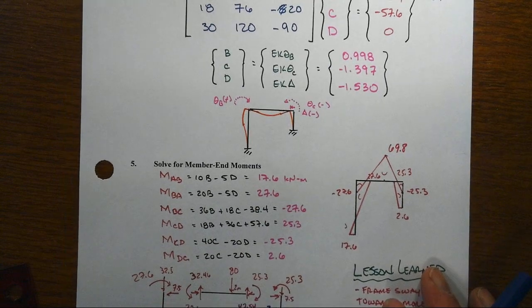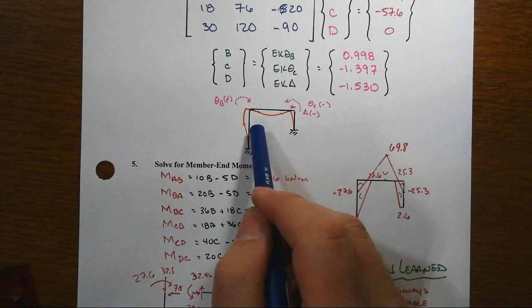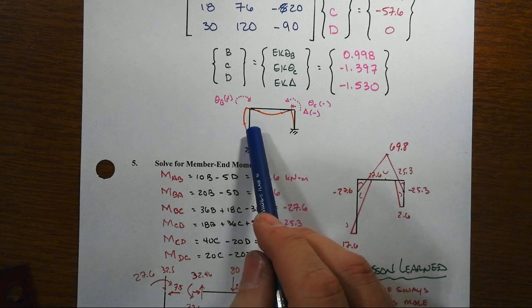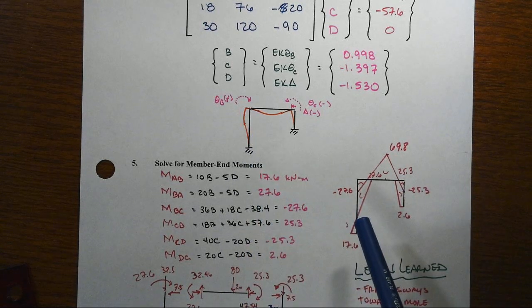When we got to the end, what we did find was that indeed the structure did sway to the left, ultimately swaying towards the more flexible column, the longer column.